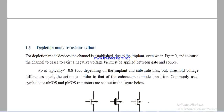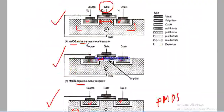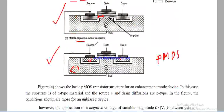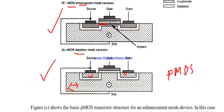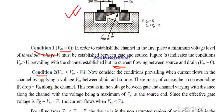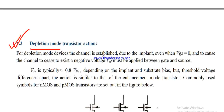This is the depletion type. The channel is formed by the doping. This is a depletion type transistor. The voltage input VDS, when higher than the threshold, causes current to flow.